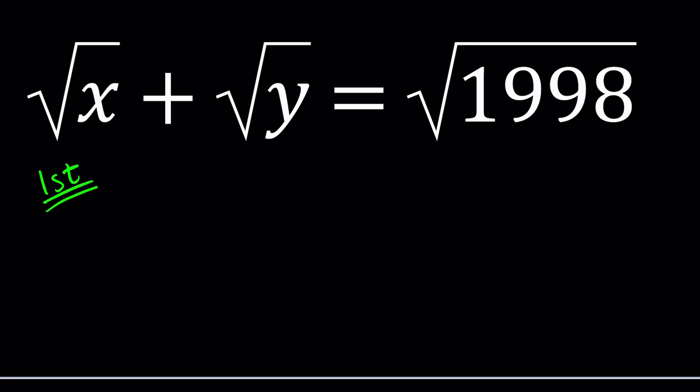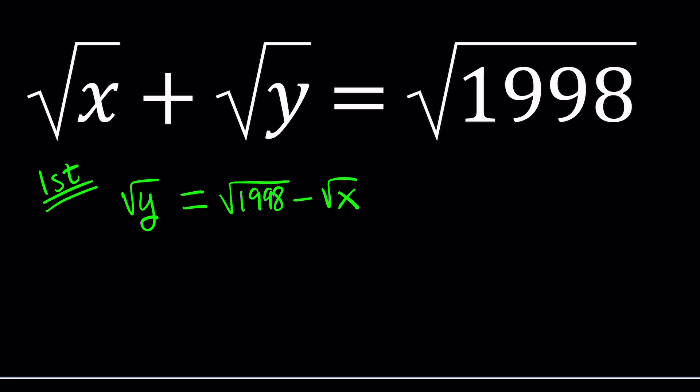For my first method, I want to go ahead and isolate one of the variables. It doesn't matter which one, but let's isolate square root of y. In other words, subtract square root of x from both sides. That gives you the square root of 1998 minus the square root of x on the right-hand side.